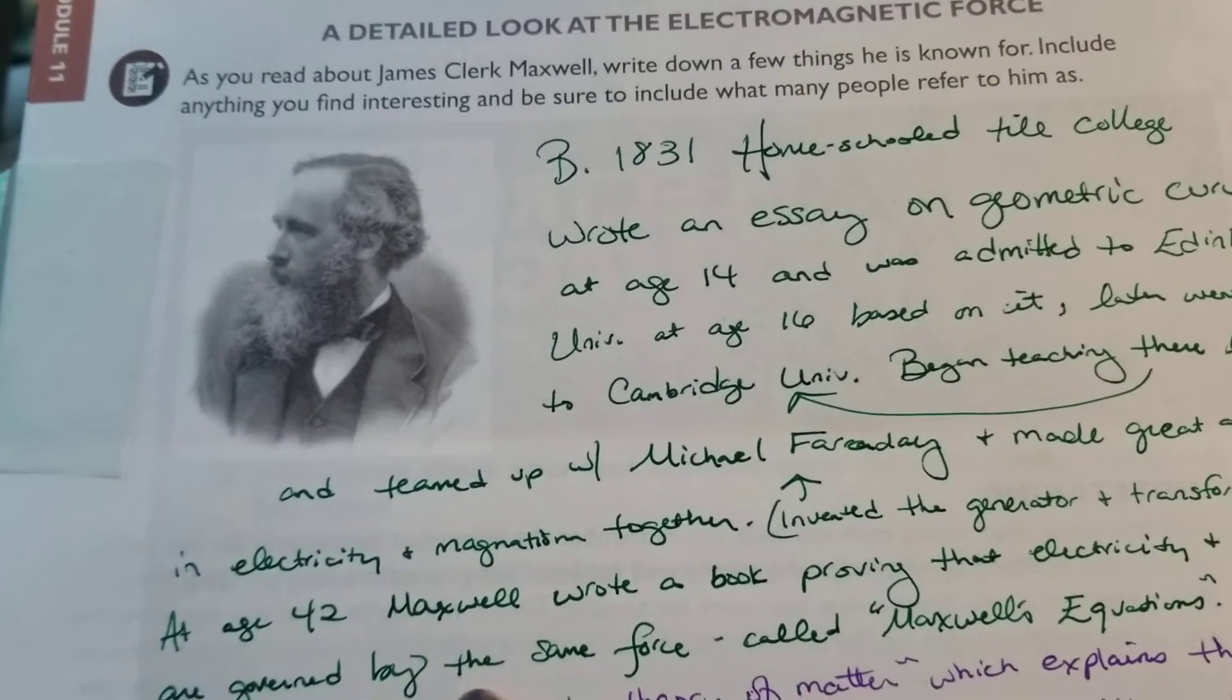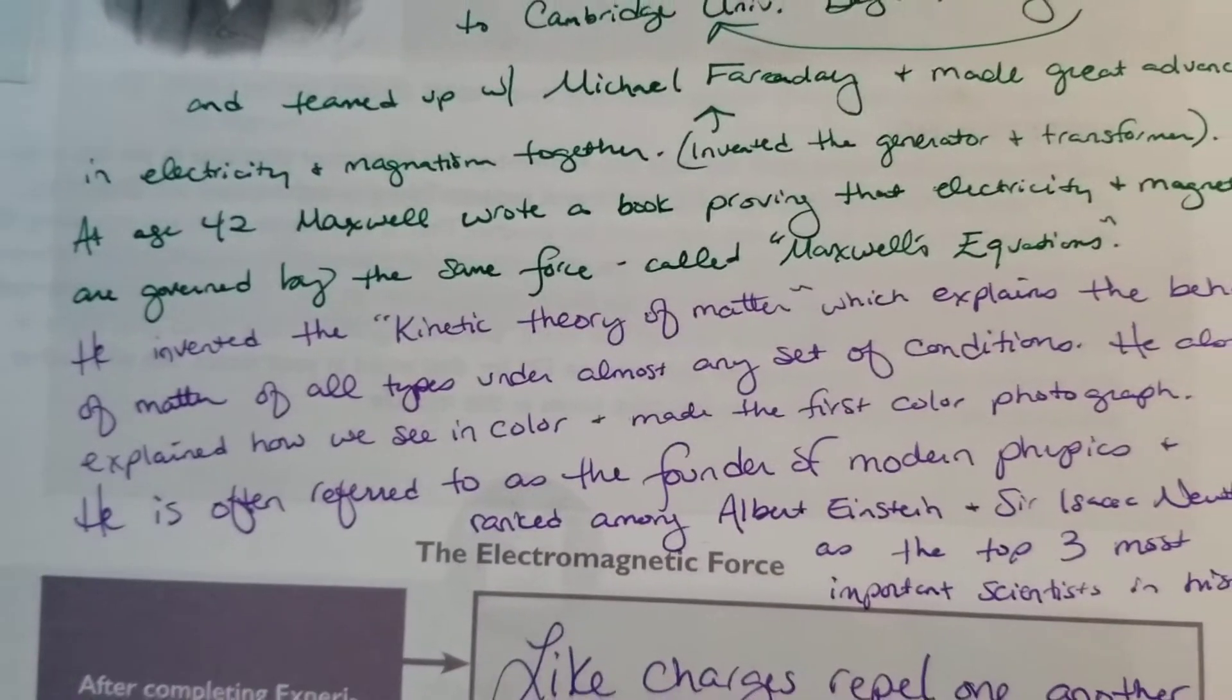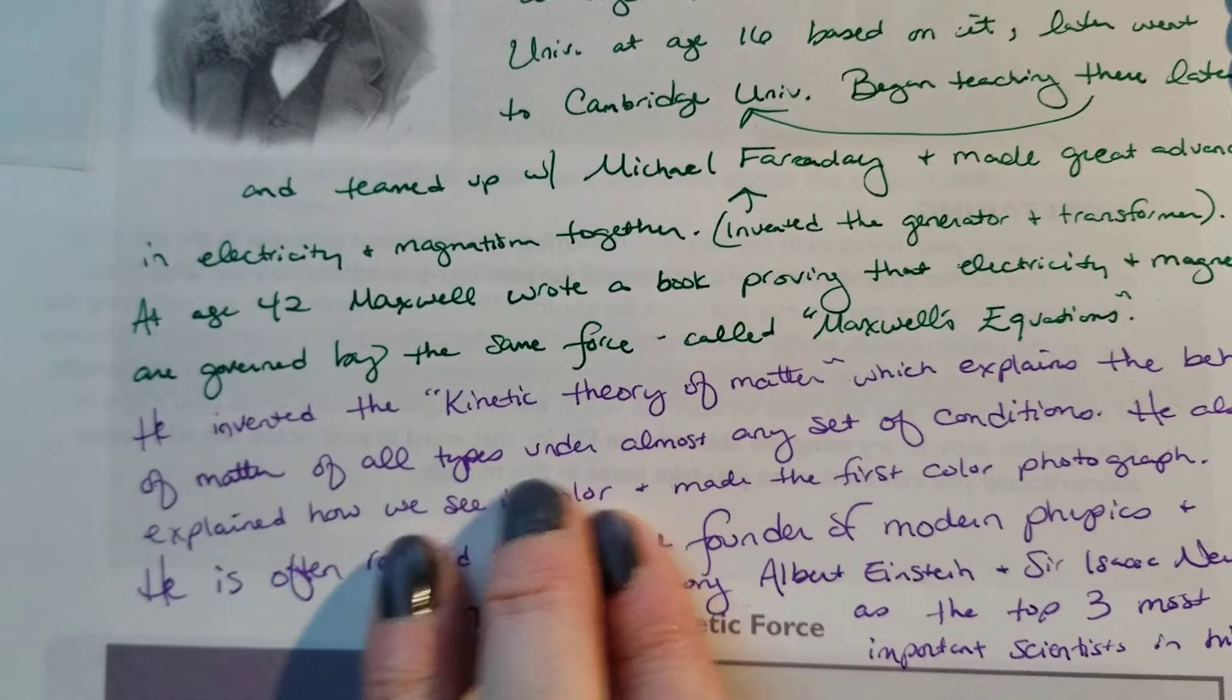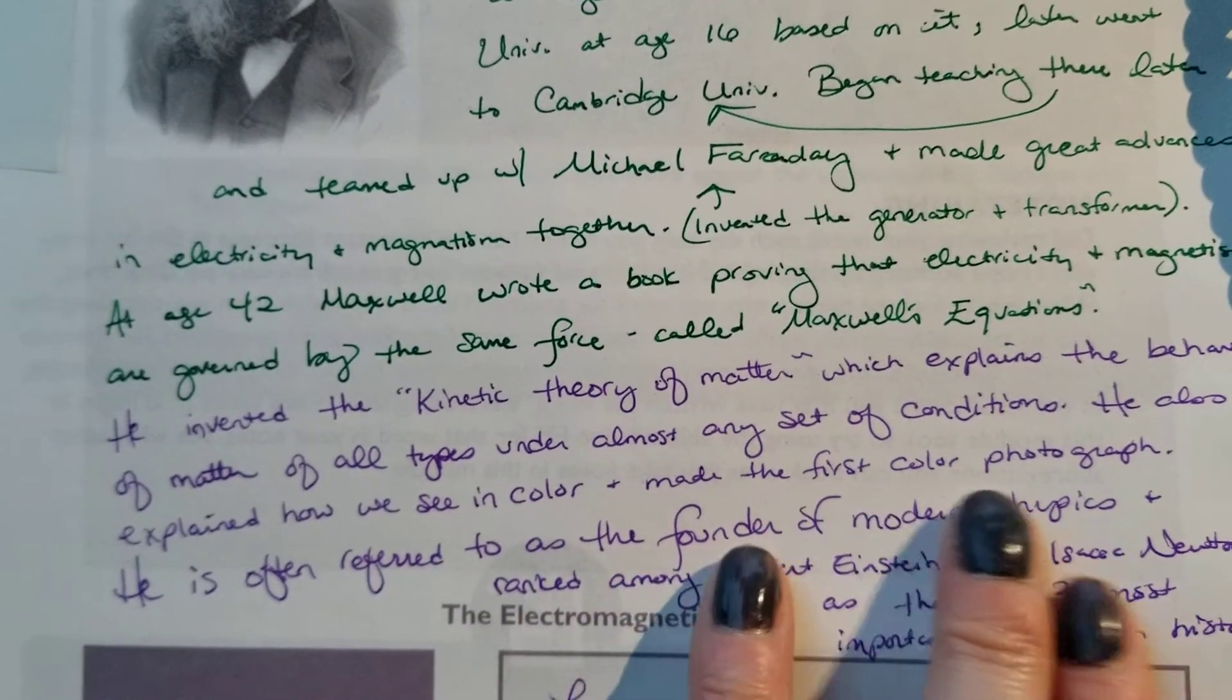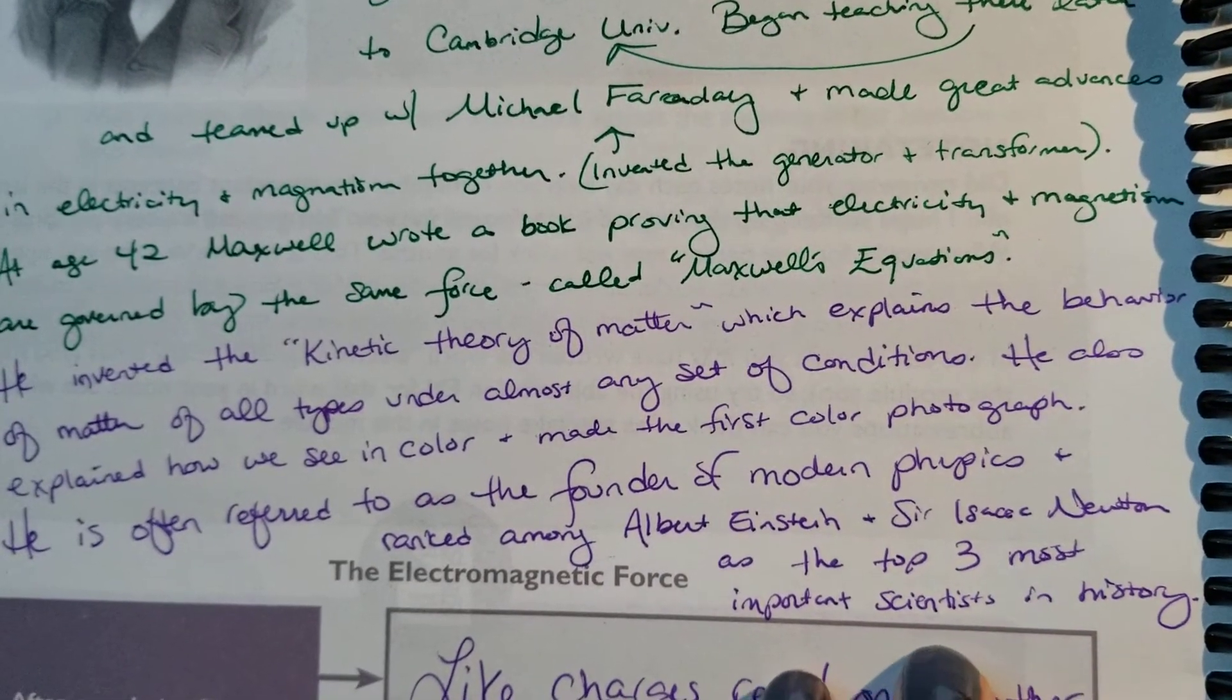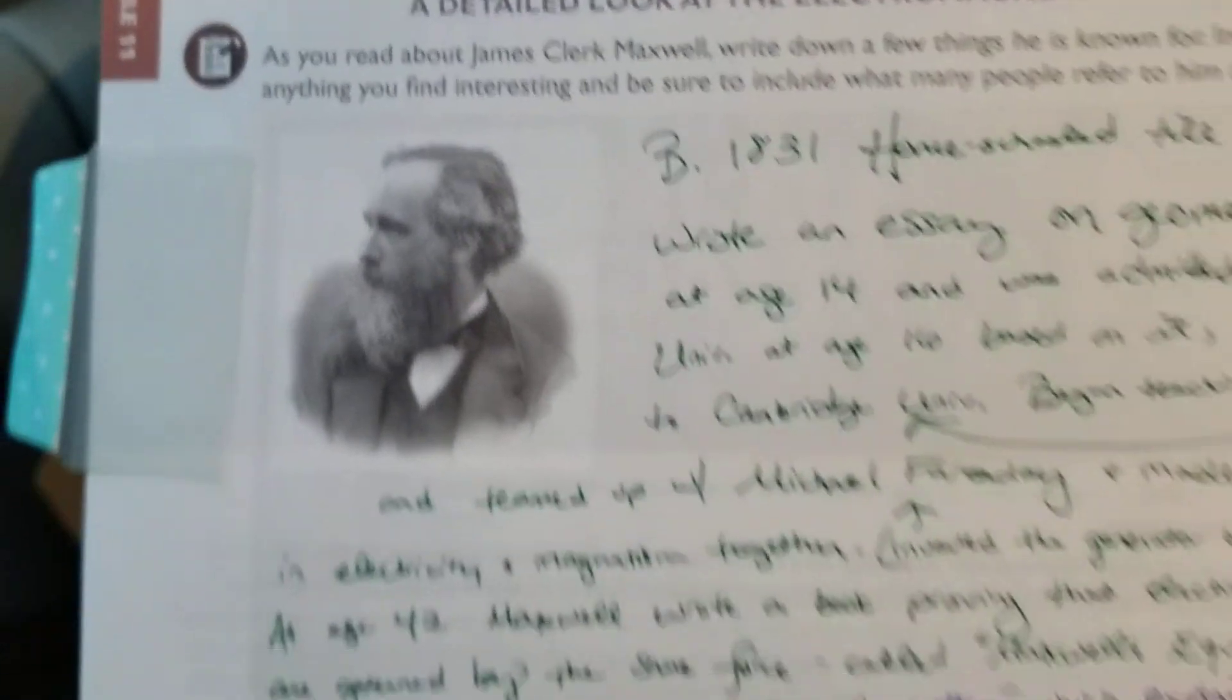At age 42, Maxwell wrote a book proving that electricity and magnetism are governed by the same force, called Maxwell's Equations. He invented the kinetic theory of matter, which explains the behavior of matter of all types under almost any set of circumstances. He also explained how we see in color and made the first color photograph. He's often referred to as the founder of modern physics and ranked among Albert Einstein and Sir Isaac Newton in the top three of the most important scientists in history.